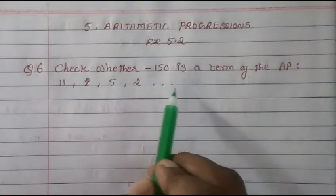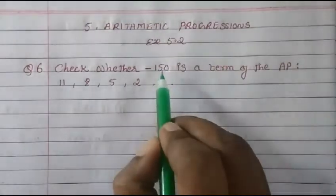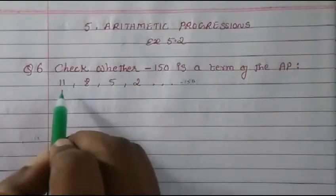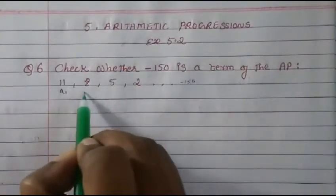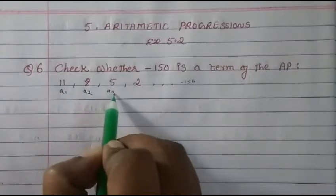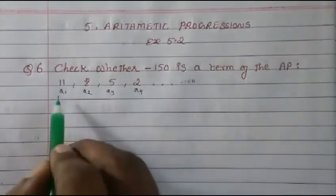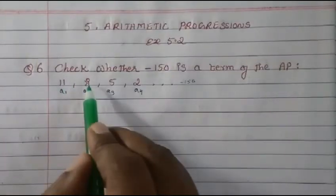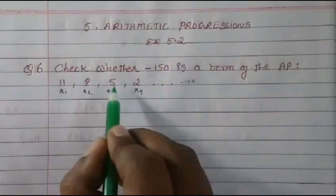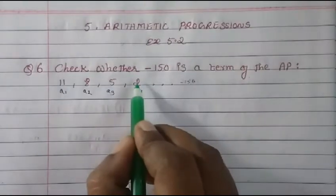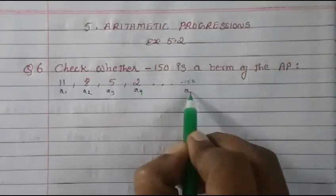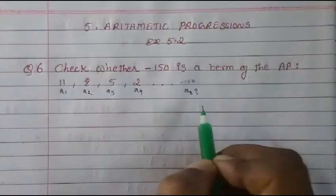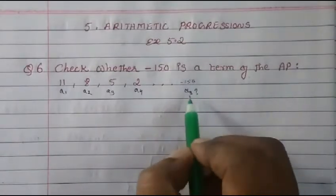The AP is 11, 8, 5, 2, and so on. So this is a1, a2, a3, a4 — meaning the first term is 11, second term is 8, third term is 5, fourth term is 2. We have to find which term minus 150 would be.